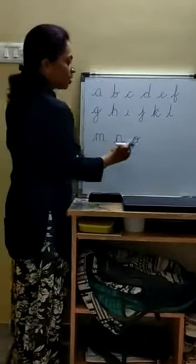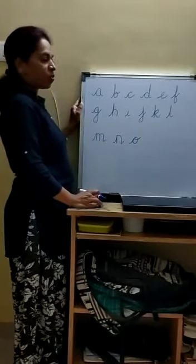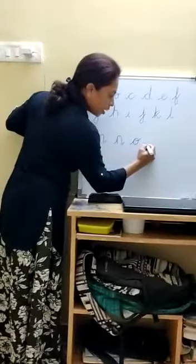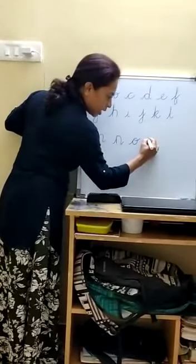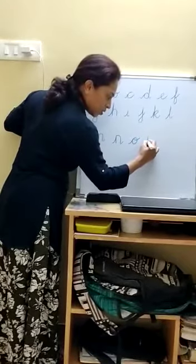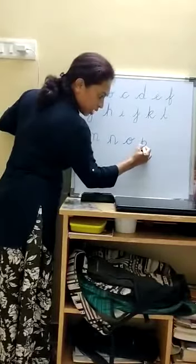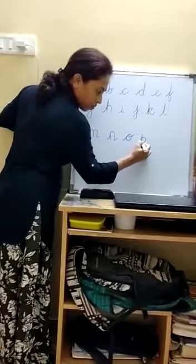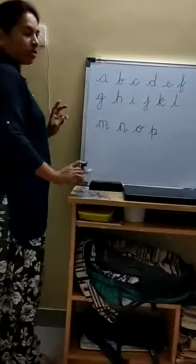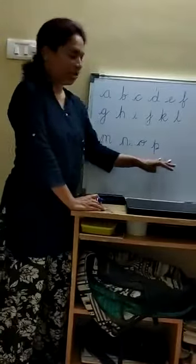Next is P. Name of the letter is P. Sound of the letter is P. How to write? Starting from the third line, go to the second line, come back to the fourth line, go back to the second line, take a U-turn, come back to the third line, and then leave with a tail. P. Pencil.